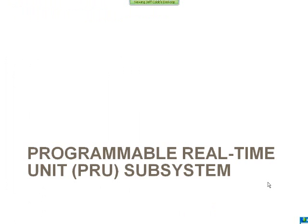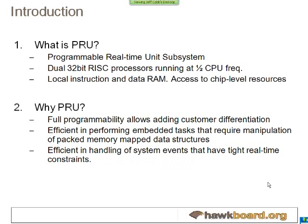There are a lot of peripherals on this device. The first to highlight is the Programmable Real-Time Unit, which is the PRU subsystem. The PRU is a new subsystem — basically two 32-bit RISC processors running at half the CPU frequency. Each PRU core has its own instruction and data RAM and can access any chip-level resources, including modifying register values in any peripherals as well as settings for the DSP and ARM. The PRU enables customer differentiation, allowing you to customize it to create a custom peripheral or anything you want within its limitations.